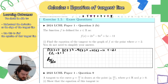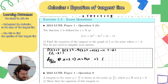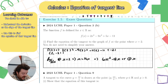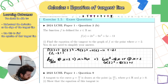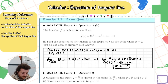My slope is going to be my first derivative evaluated at x = 2. Using the power rule: dy/dx = 6x² − 18x + 5. Evaluating at x = 2: 6 times 2² minus 18 times 2 plus 5, which gives a slope of −7.